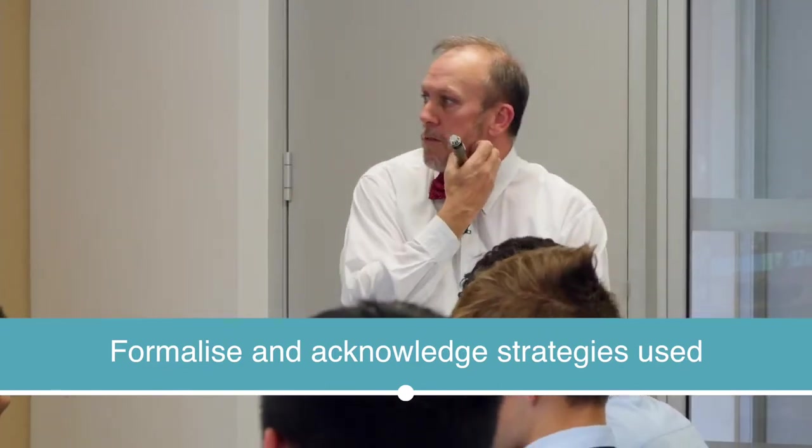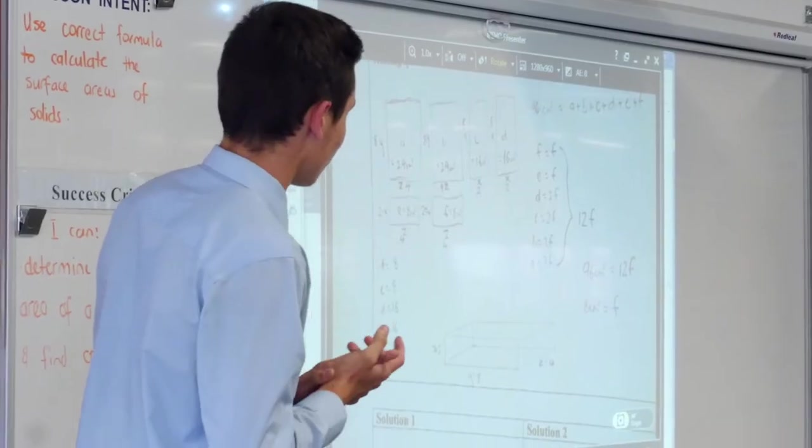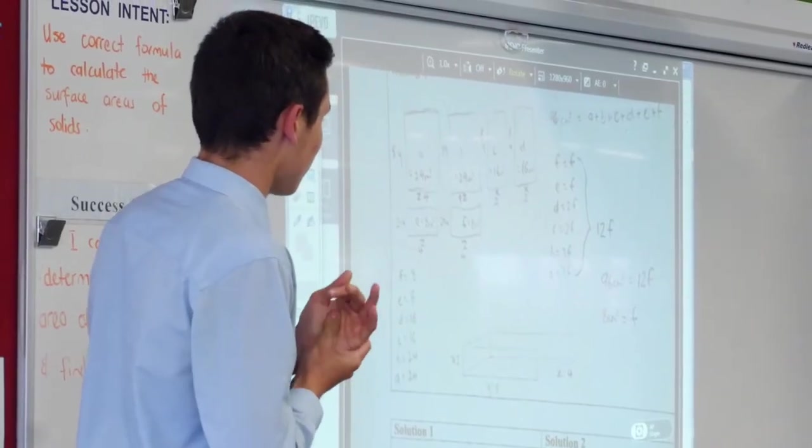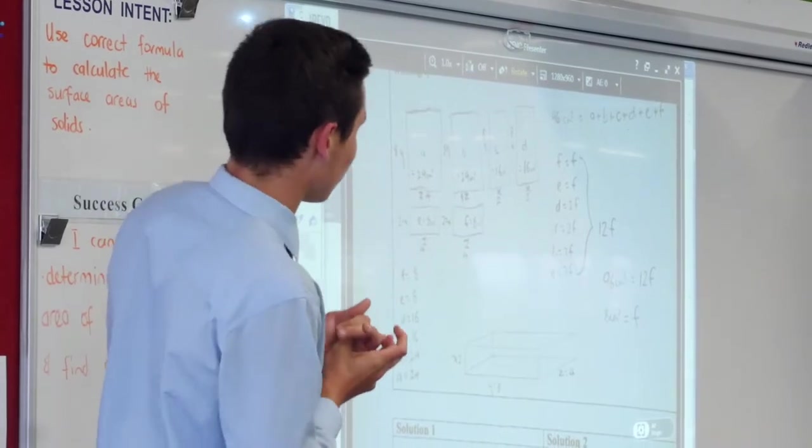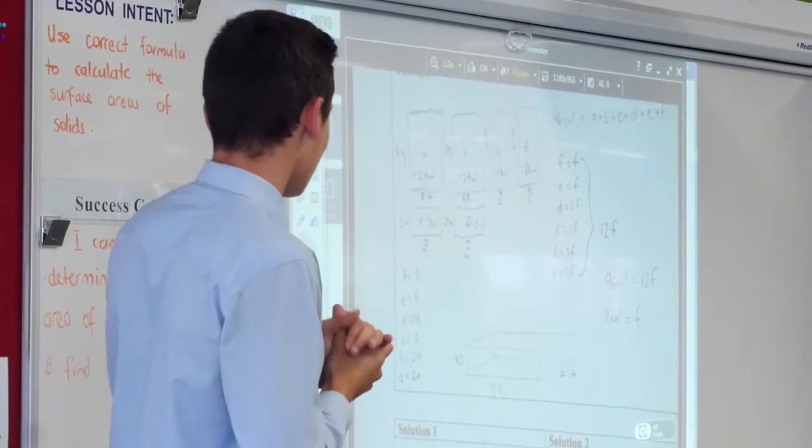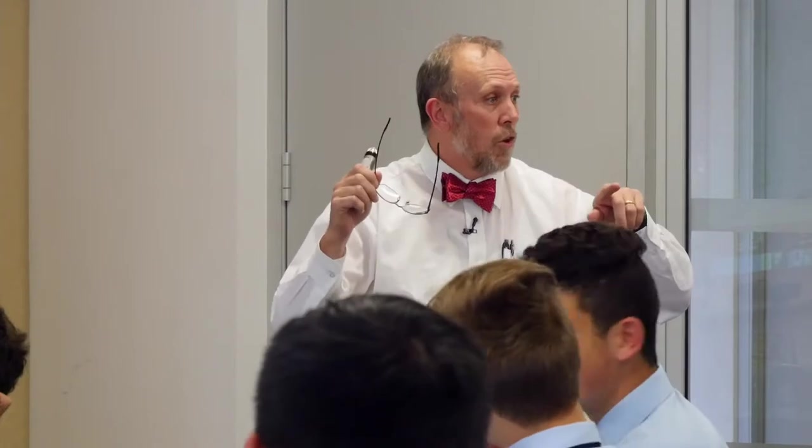And then all of them together is 12F. And so 96cm squared is 12F. And if you divide that, 96 divided by 12 equals 8cm. So, F equals 8. So, who did that as well? Who got that idea?